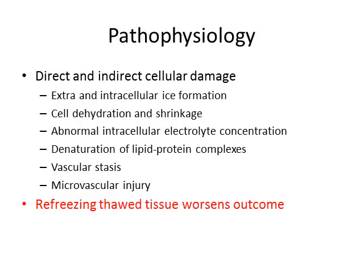The pathophysiology of frostbite is complex. Tissue injury occurs through direct and indirect cellular damage, extra- and intracellular ice crystal formation, cell dehydration and shrinkage leading to apoptosis, abnormal intracellular electrolyte concentration, and denaturation of lipid-protein complexes. Eventually vascular stasis and microvascular injury occur, leading to ischemia and infarct. It is very important to remember that refreezing thawed tissue worsens outcome.